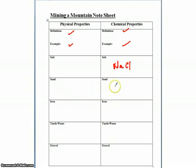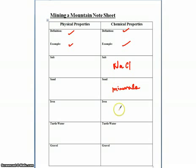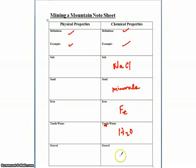Sand was basically minerals, because that's what rock is — basically different mixtures of minerals together. Iron is iron. Water is basically H2O, and gravel again is a mixture of minerals.